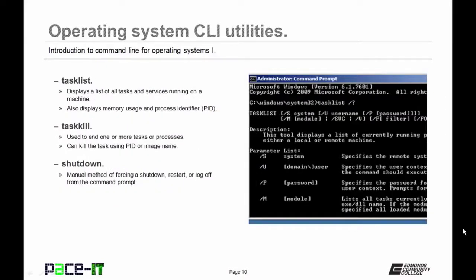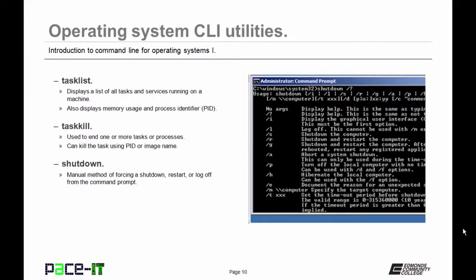Tasklist displays a list of all tasks and services running on a machine — it also shows memory usage and the process identifier (PID). You should run tasklist before you run taskkill. Taskkill is used to end one or more tasks or processes — it can kill the task using the PID or image name. Shutdown is a manual method of forcing a shutdown, restart, or log off from the command prompt.